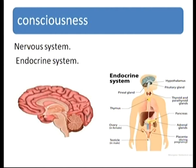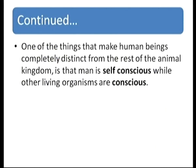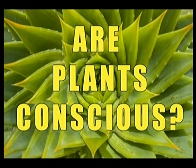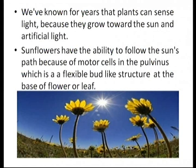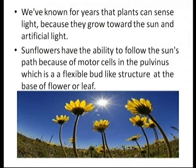Consciousness in living beings is due to the nervous system and endocrine system. Man is self-conscious while other living organisms are simply conscious. Are plants conscious? Yes — we have known for years that plants can sense light because they grow towards the sun and even towards artificial light. Sunflower is the best example: it follows the sun's path because of motor cells in the pulvinus, a flexible bud-like structure at the base of the flower or leaf.